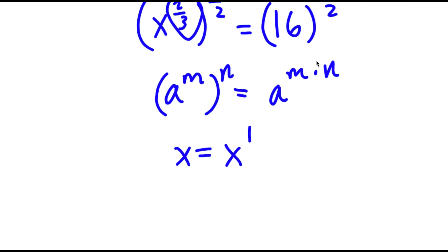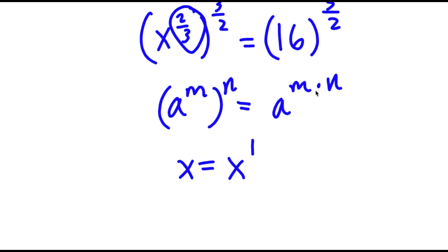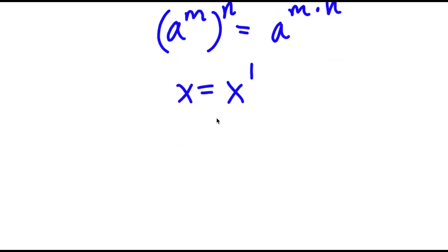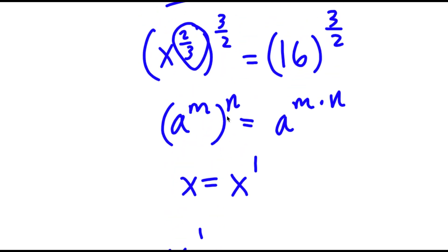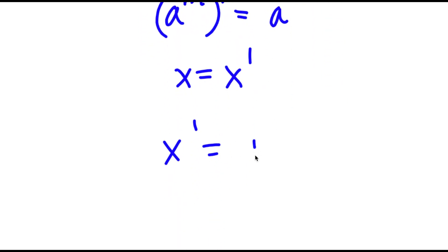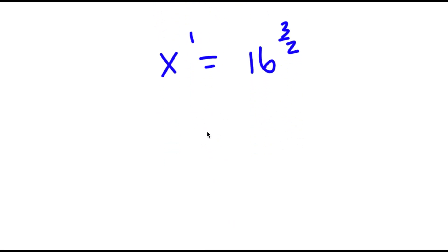Because if I have something in the form a to the power of m, to the power of n, this equals a to the power of m times n: x to the power of 2/3, to the power of 3/2, gives x to the power of 2/3 times 3/2, which is simply 1. And this is equal to 16 to the power of 3/2. So I have x equals 16 to the power of 3/2, and we have to simplify this.